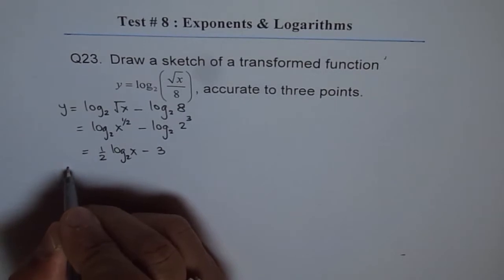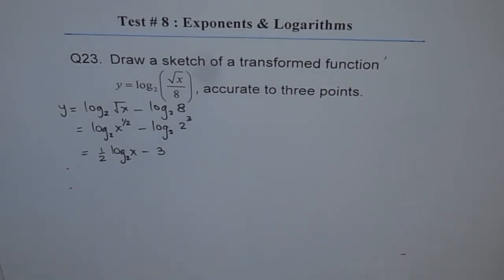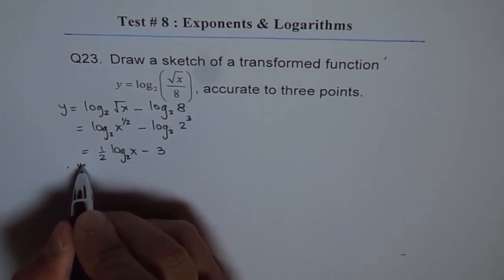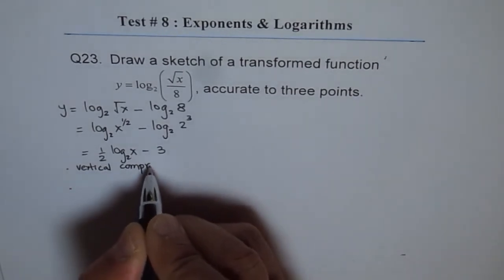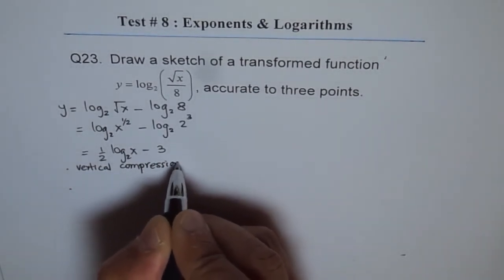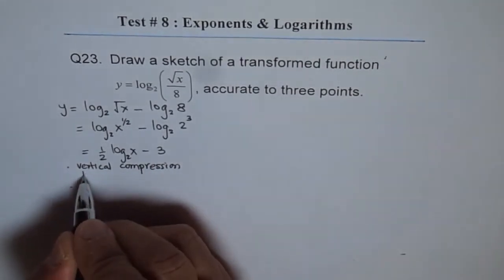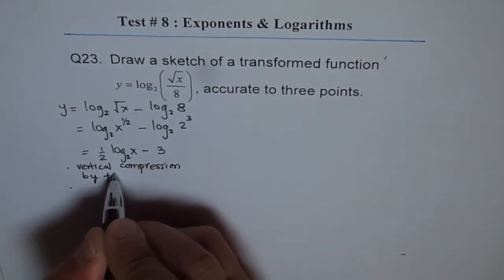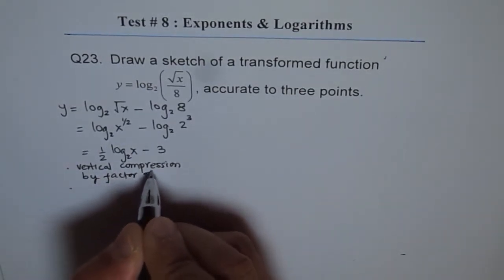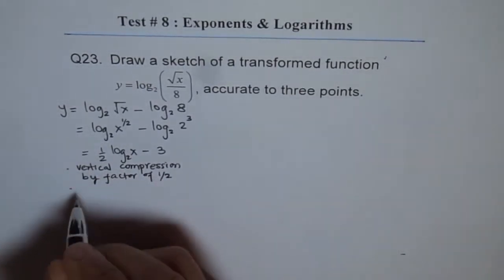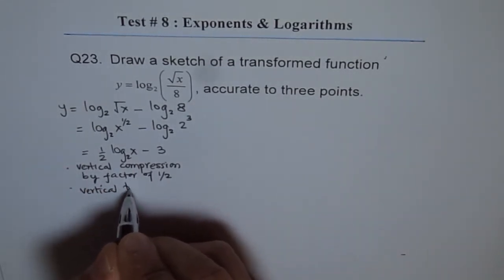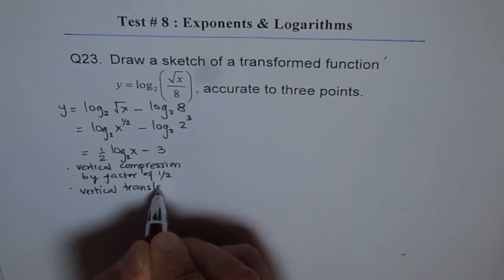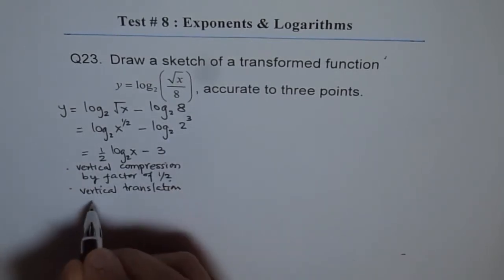So we have two transformations here as compared to the original function log₂(x). One is vertical compression by a factor of half, and second is vertical translation 3 units down.